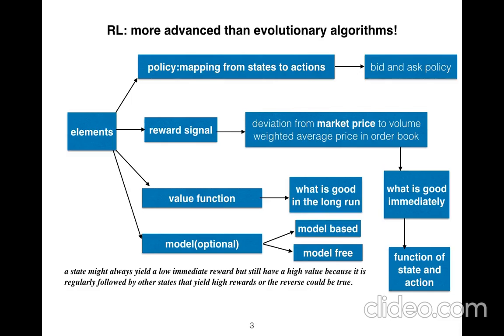There are different concepts in reinforcement learning, so you should be familiar with policy, reward signal, value function, model. Policy is just a mapping from states to actions. Example could be bid and ask policy. Reward signals deviation from market price to volume weighted average price in order book. What is good immediately is a function of state and action.